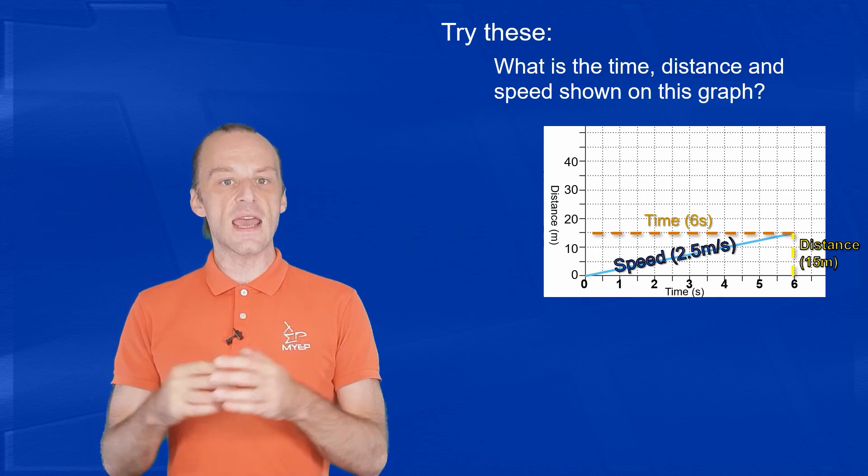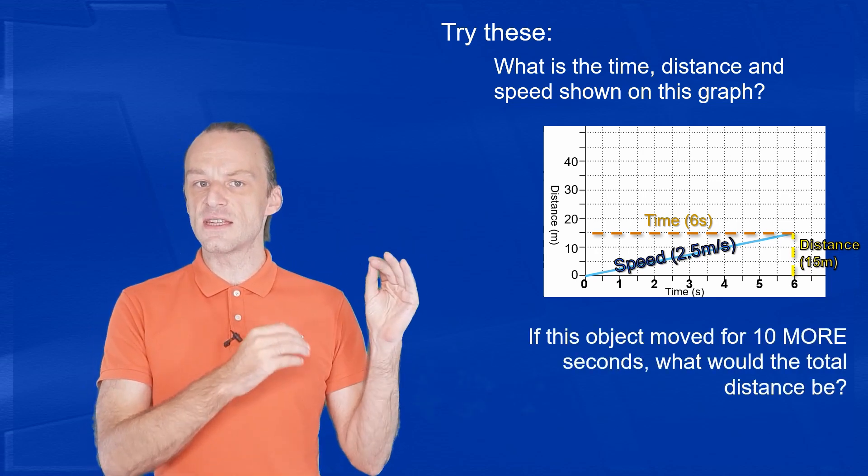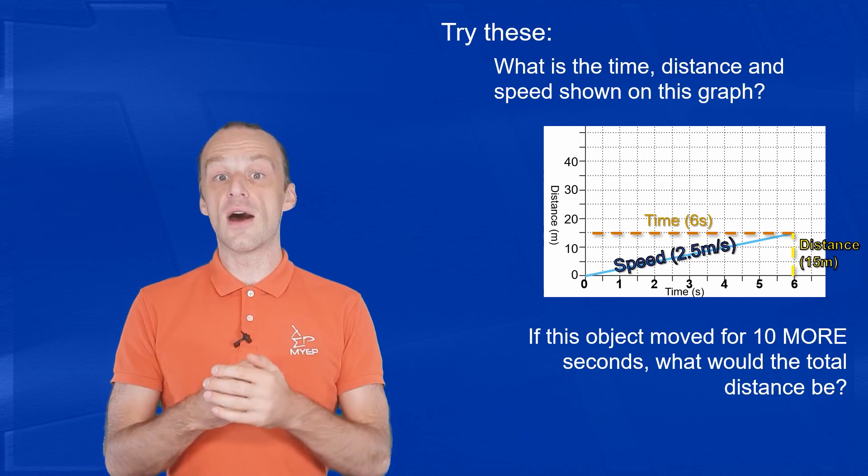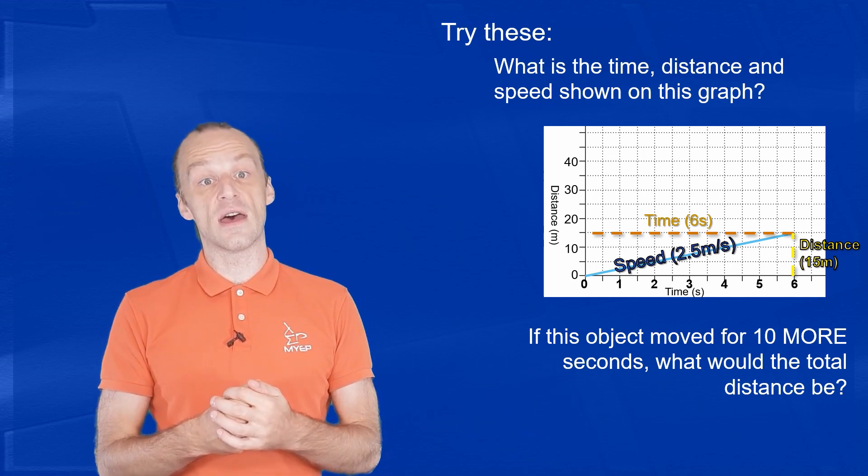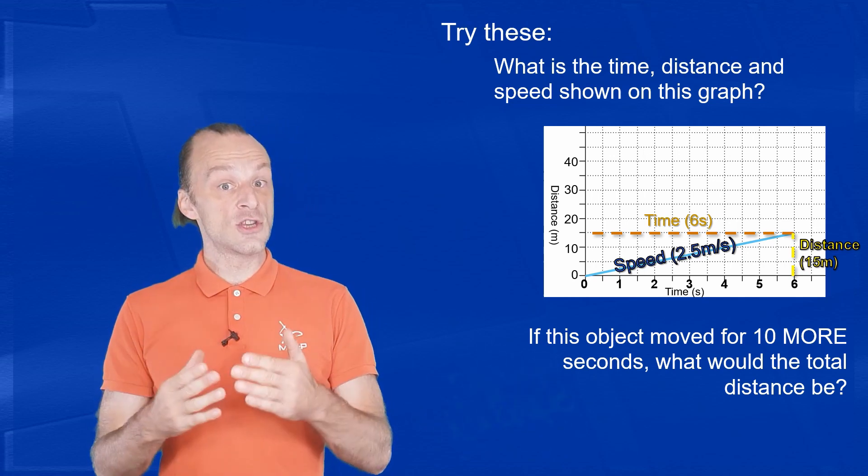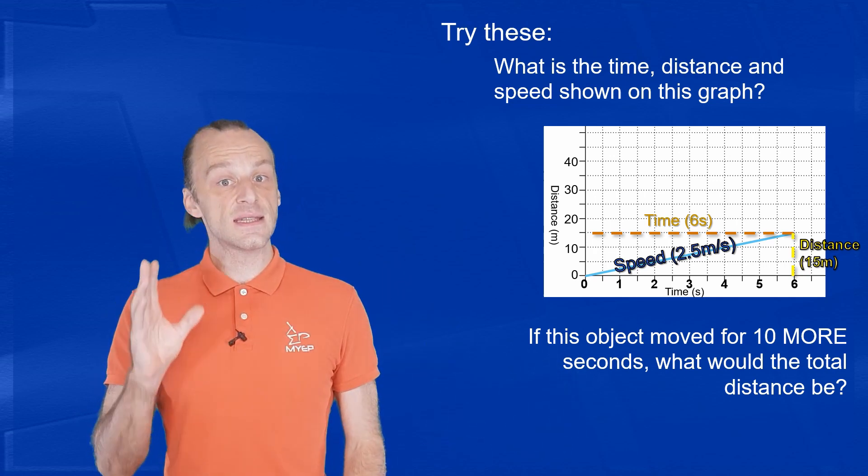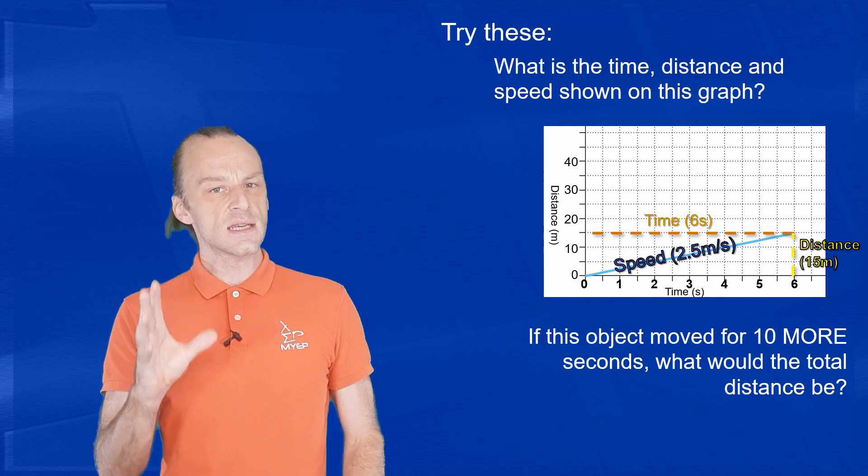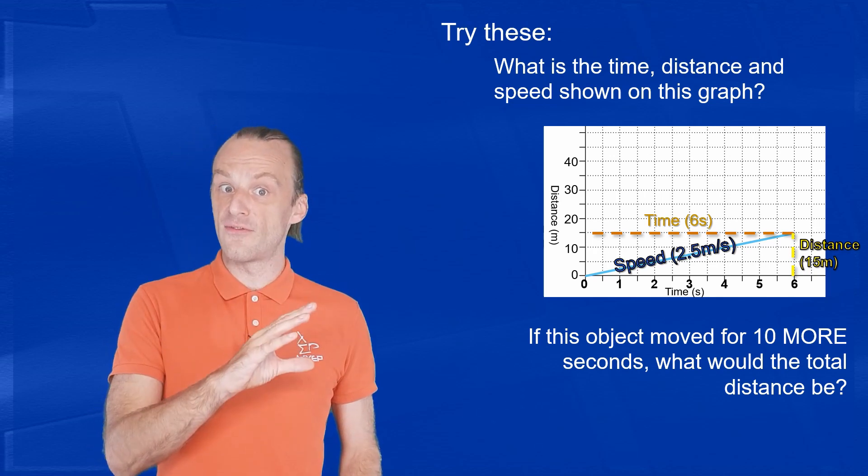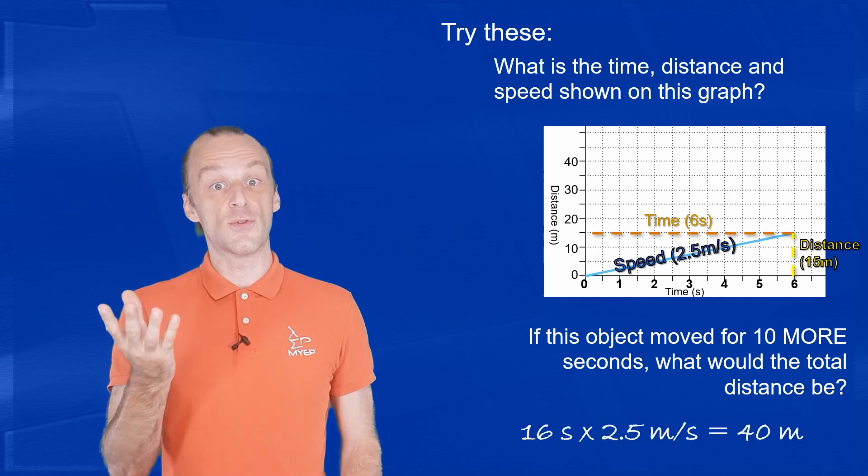And again, if this object moved for another 10 seconds, how far would it have moved altogether? So our initial 6 seconds plus another 10 seconds is 16 seconds. 16 seconds times 2.5 meters per second is 40 meters.